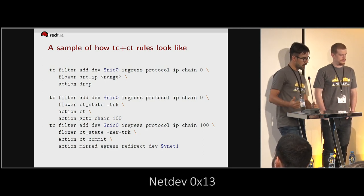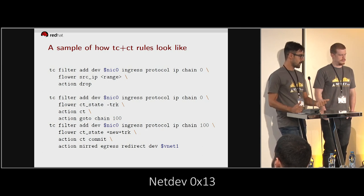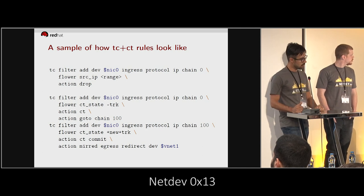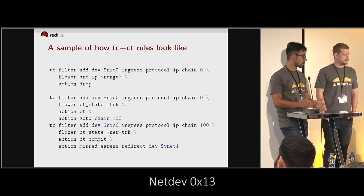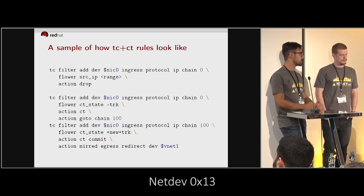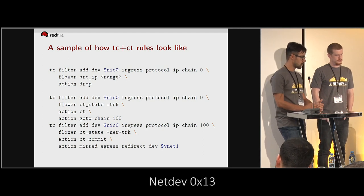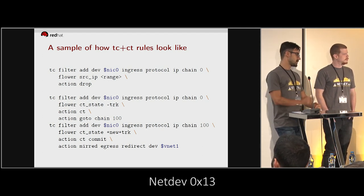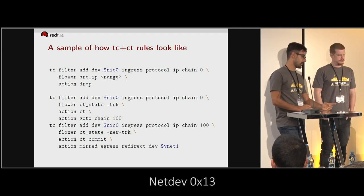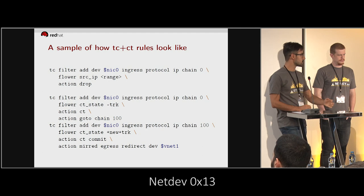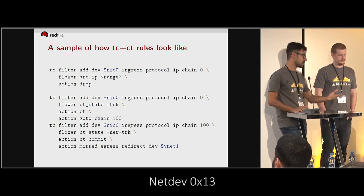And the next action will go to chain 100, which is the proposal that Mellanox has been doing. Then on chain 100, we match on CT state — in this case with the new state and the tracking state — so that's a connection that we want to commit. We can actually confirm it in the conntrack table and then take the action to output this packet on another port. This is just a sample — there were more rules in the testing, like for outputting the packet in the minus-new state. But just to have an idea, these are enough.